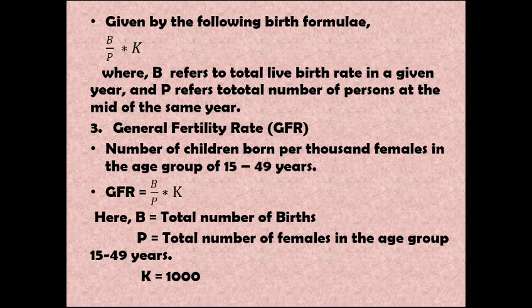Next we have the formula by which CBR or crude birth rate can be derived. The formula is: CBR = (B ÷ P) × K, where K equals one thousand, B refers to total live births in a given year, and P refers to the total number of persons at the mid-point of that same year.